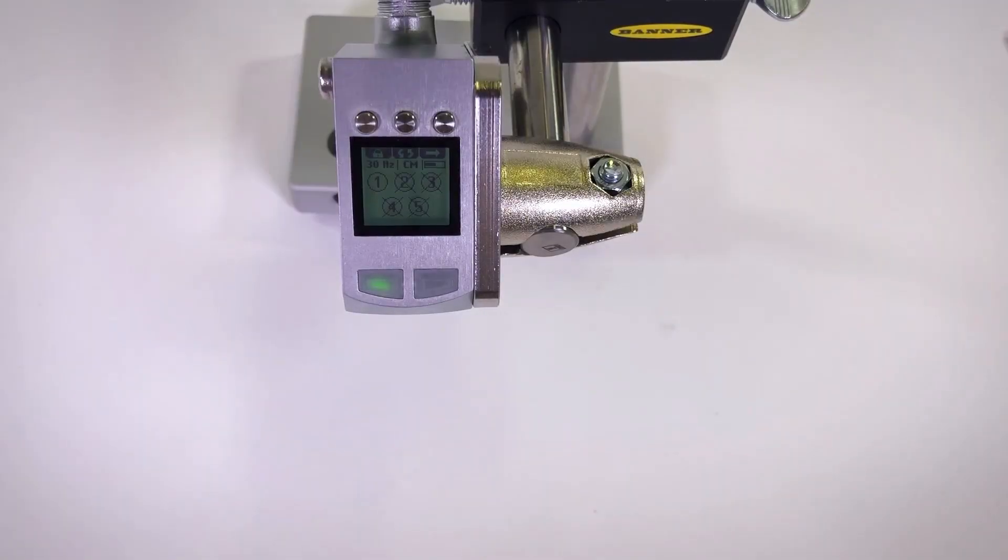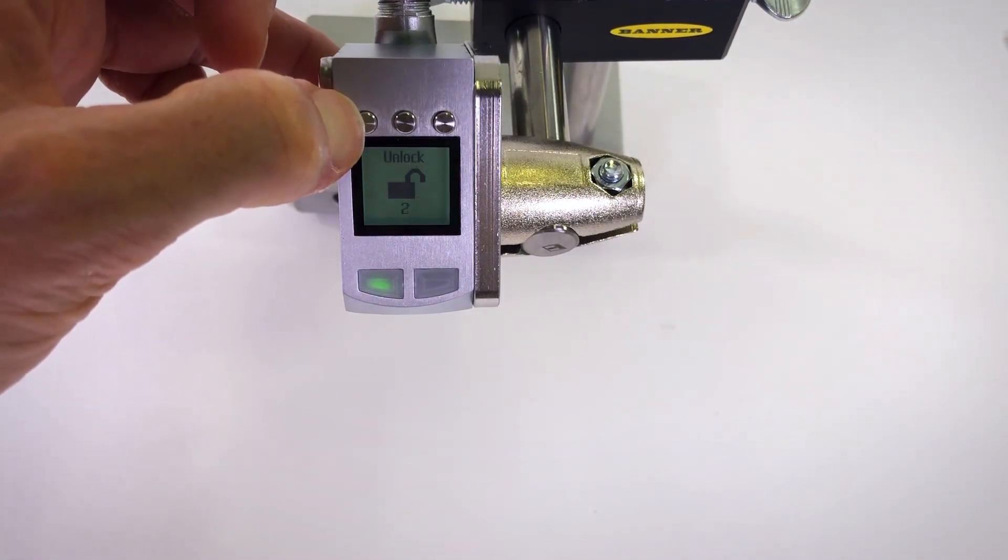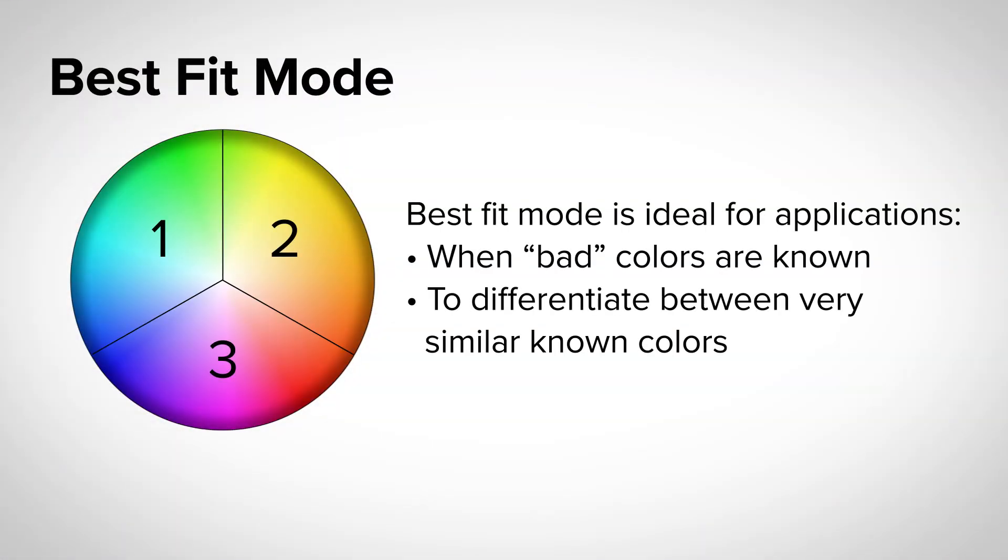To teach the sensor, we will first unlock the LCD screen by pressing the lock unlock key for three seconds. We will first teach the sensor in best fit mode. Best fit mode is ideal for applications where all the colors we expect are known and is great for applications involving sorting of products based on color.